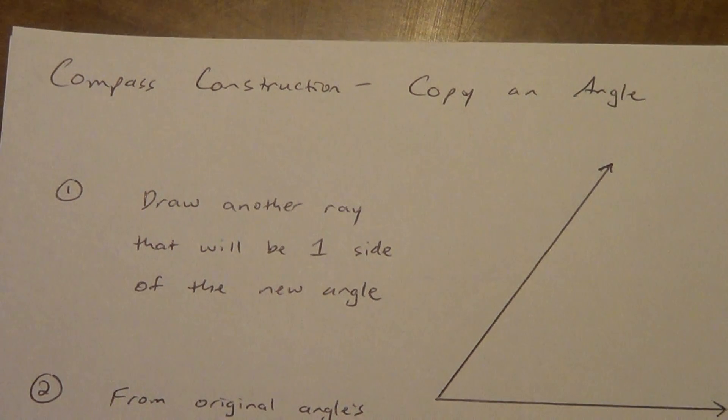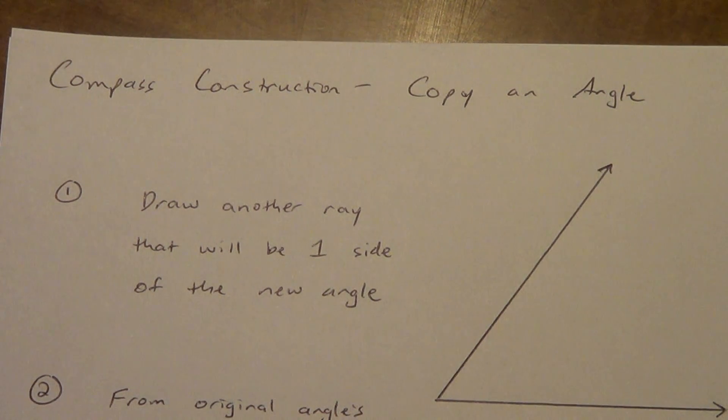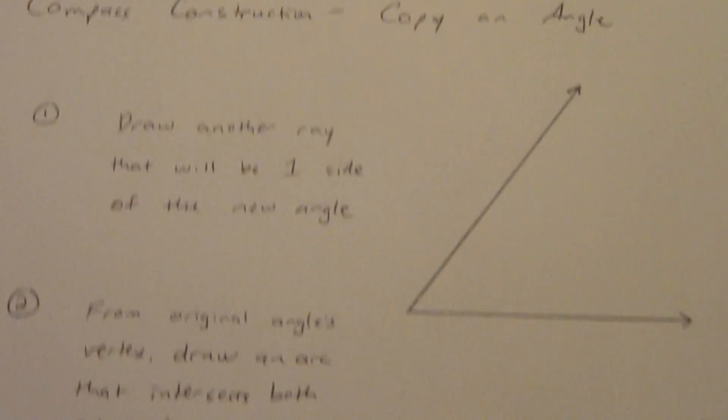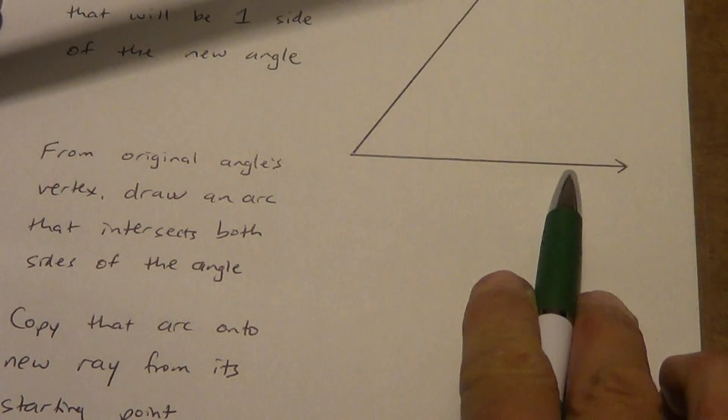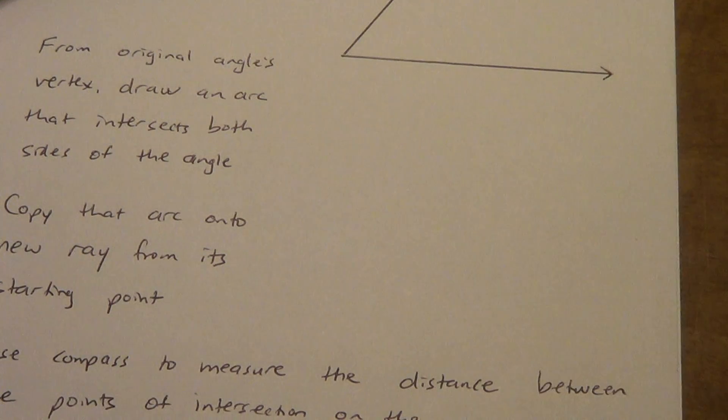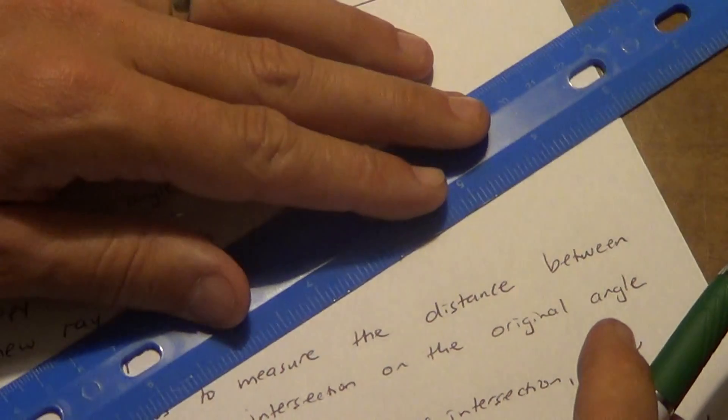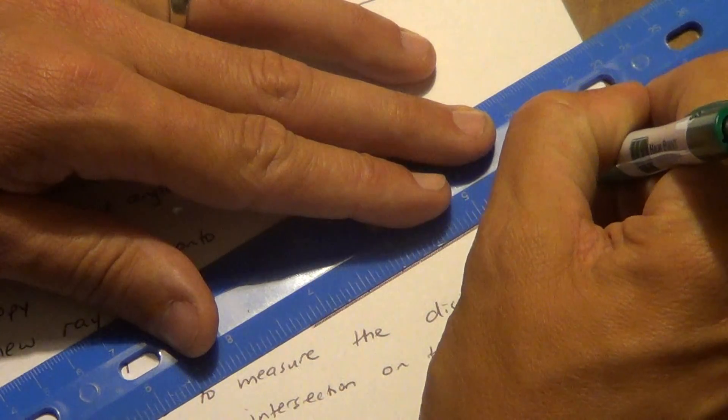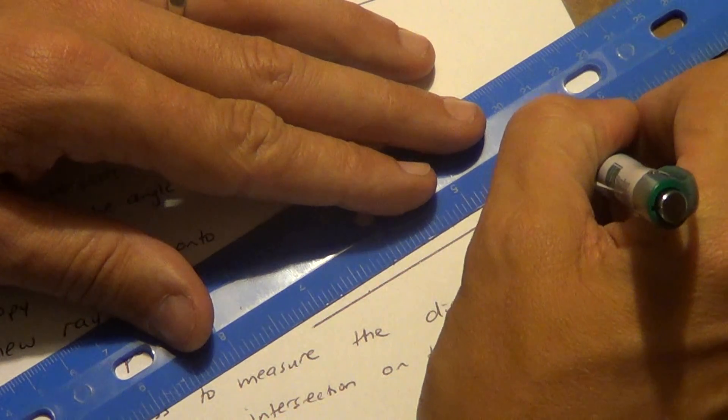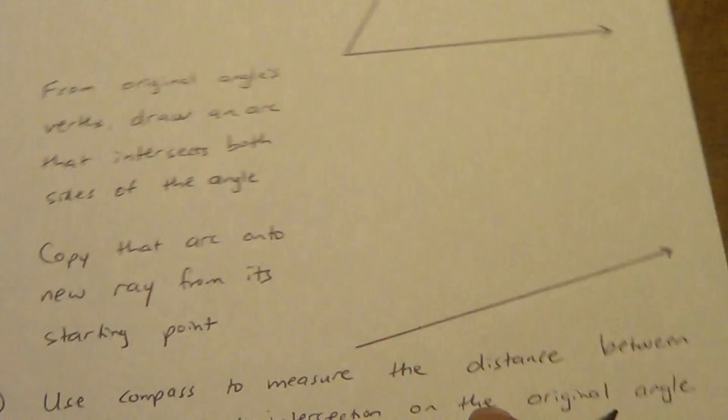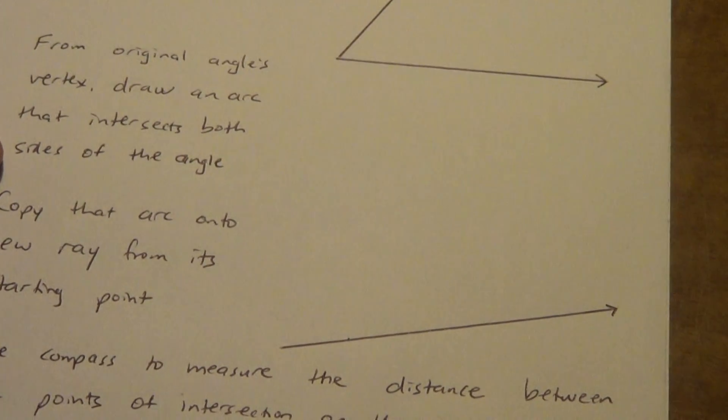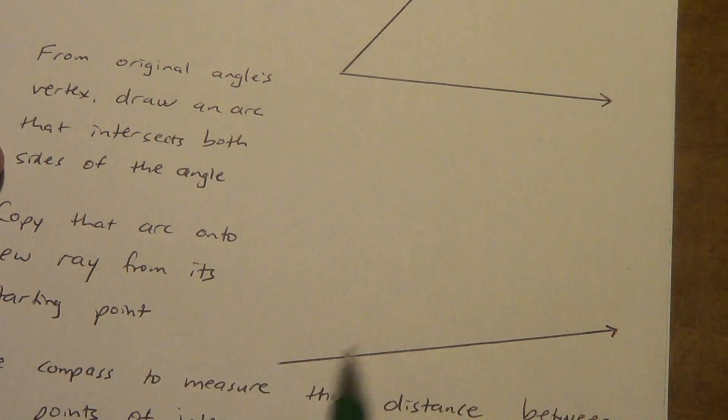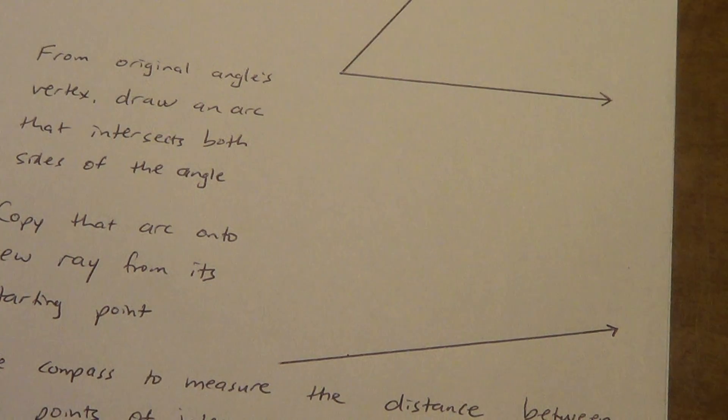Here we go with step one. Draw another ray that will be one side of the new angle. Just because this one's nice and flat, this one doesn't have to be nice and flat. It can be tilted a little bit or whatever. It doesn't have to be the same length. It can be a little bit longer or shorter, but if you make it too much shorter, you might run into a problem. Mine isn't exactly the same direction, it's actually a little bit longer, that's fine. So there's step one.